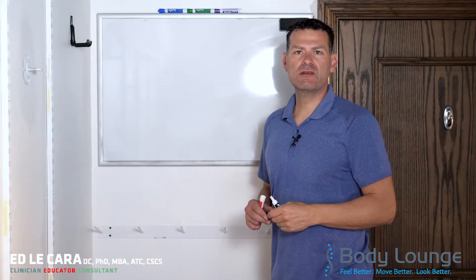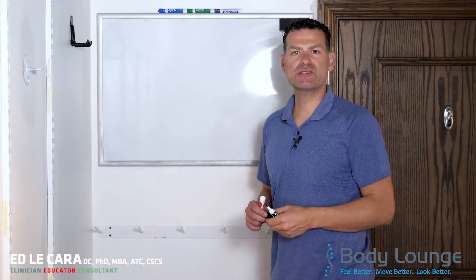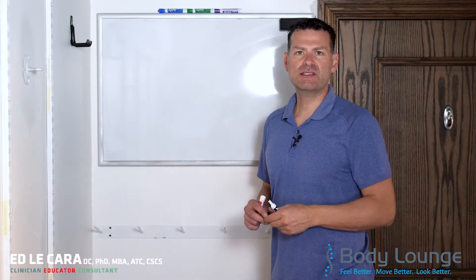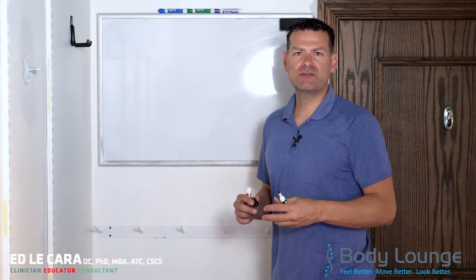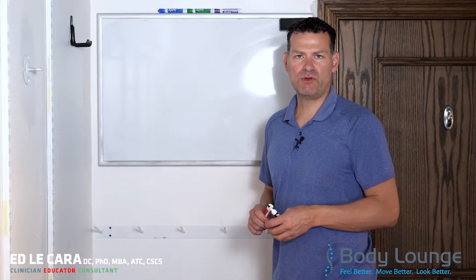In this video, I'm going to talk about lumbar disc herniations and the resultant sciatica that occurs because of the disc herniation. If you need to look at some previous videos that I've done, I do explanations of the normal anatomy and what happens with a disc bulge.